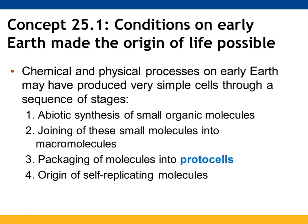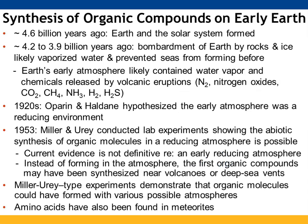Dating back for context: 4.6 billion years ago, organic compound synthesis occurred on early Earth. Earth and the solar system formed between 3.9 and 4.2 billion years ago. The Earth was bombarded by rocks and ice that likely vaporized water and prevented seas from forming. Earth's early atmosphere most likely contained water vapor and gases released from volcanic eruptions, such as nitrogen, nitrogen oxides, carbon dioxide, methane, ammonia, hydrogen, and hydrogen sulfide.